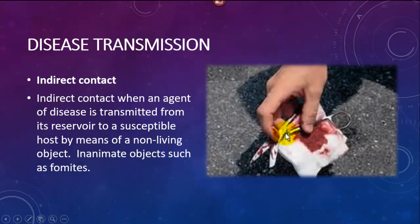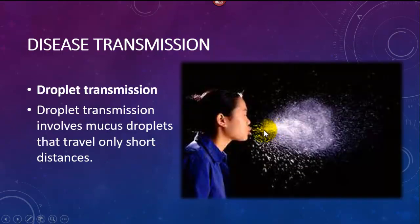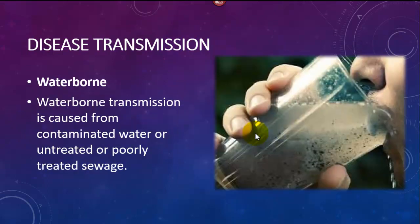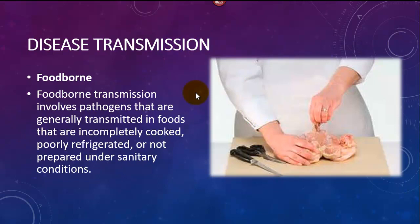Direct contact involves physical contact between a source and a host. Indirect contact involves inanimate objects — scissors, gauze, blood. Droplet transmission involves mucus droplets that travel only a short distance. Waterborne transmission is from drinking bad water. If you're ever stranded, you're not supposed to drink water that doesn't move, or untreated water — stagnant water has billions of little protozoans in it.